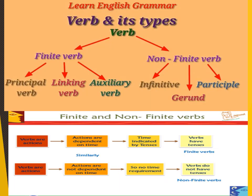This slide is again telling you the difference between finite and non-finite verbs. Finite verbs are divided into three kinds: principal verbs, linking verbs (is, am, are), and auxiliary verbs (am, can, shall, should). Non-finite verbs consist of three kinds: infinitive, participle and gerunds. In finite verbs, actions are dependent on time, indicated through tenses. Non-finite verbs denote action but actions are free of time — no tense requirement. Time-bound is finite verb; non-finite verb is not time-bound.